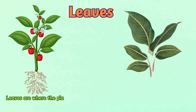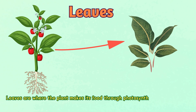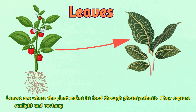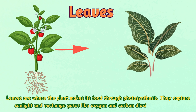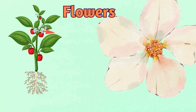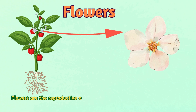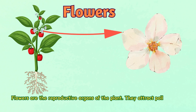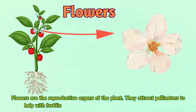They capture sunlight and exchange gases like oxygen and carbon dioxide with the air. Number four: flowers. Flowers are the reproductive organs of the plant. They attract pollinators to help with fertilization.